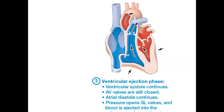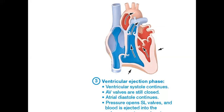Step three is ventricular ejection — the ventricles continue to contract (ventricular systole continues), building enough pressure to finally push open the semilunar valve — either in the pulmonary trunk or the aortic valve — and eject blood out. The pressure the ventricles must generate to eject blood through the semilunar valve is called afterload. Make a flashcard on that: afterload is the pressure each ventricle must create to eject blood past the semilunar valve.